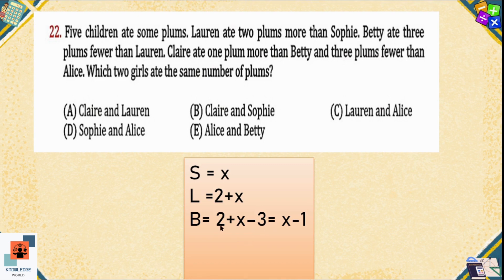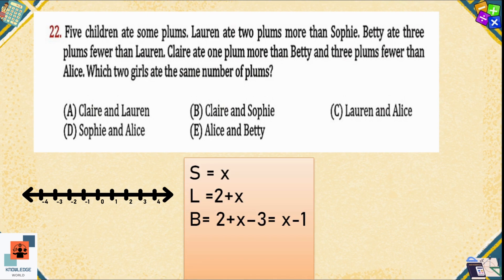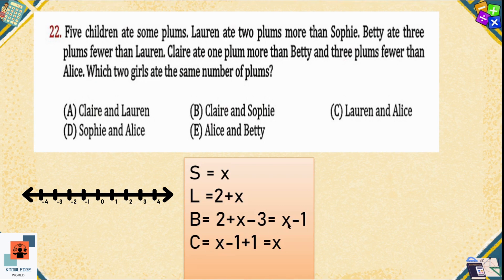So Betty equals x plus two minus three, which simplifies to x minus one. That means Betty has eaten one fewer plum than Sophie. Then Clare ate one plum more than Betty, so Clare equals Betty's count (x minus one) plus one. On the number line, negative one plus one equals zero, so Clare equals x. That means Clare has eaten the same number of plums as Sophie.